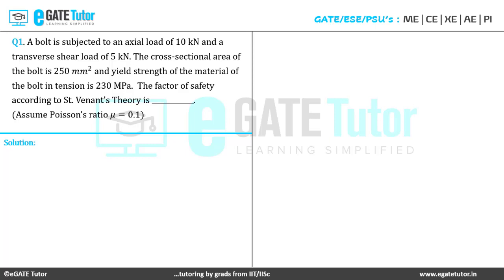Question 1: A bolt is subjected to an axial load of 10 kilonewtons and a transverse shear load of 5 kilonewtons. The cross-sectional area of the bolt is 250 mm² and the yield strength of the material in tension is 230 MPa. The factor of safety according to Saint-Venant's theory is — assume Poisson's ratio mu = 0.1.